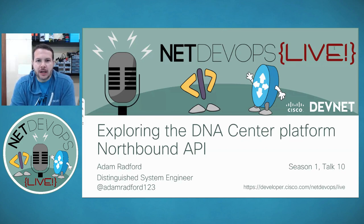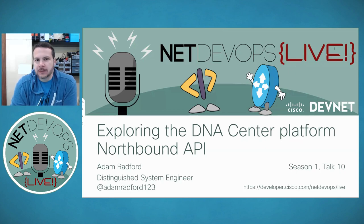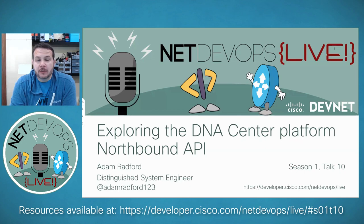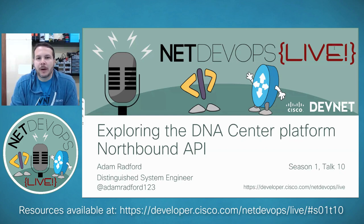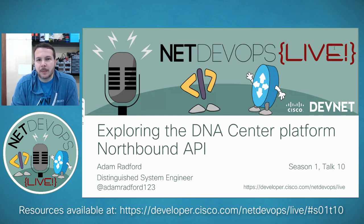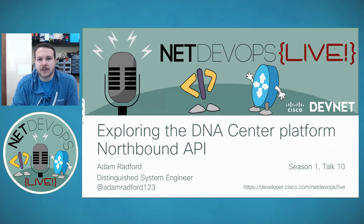Adam will be taking us through an exploration of the DNA Center APIs for northbound interaction and all of the different possibilities that we have there. As always, we will be covering Q&A in the question and answer panel. If you're looking for the slides or links to code samples and other resources, please check the webinar resources up on the website. I will drop a link directly to that in the chat panel in just a moment. With that, I'll hand it over to Adam to kick us off.